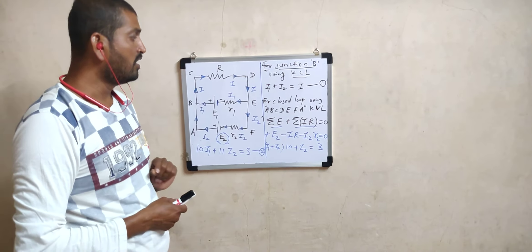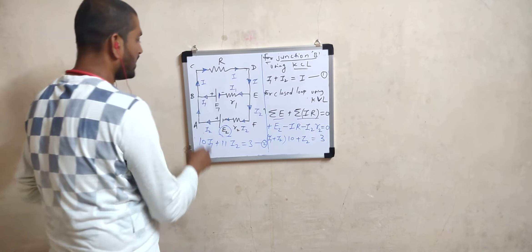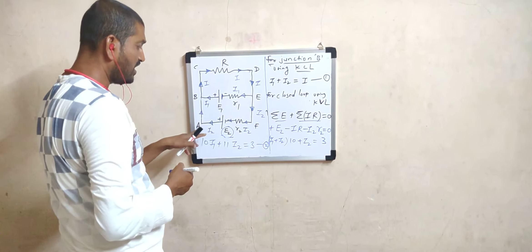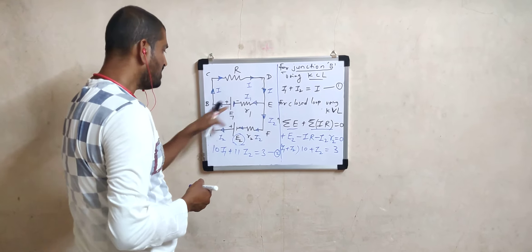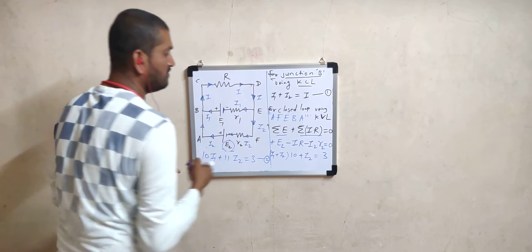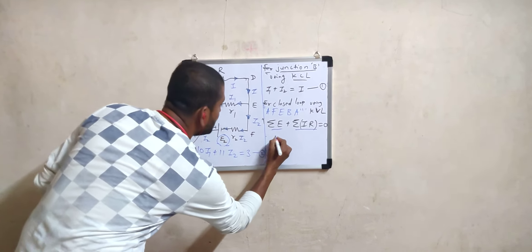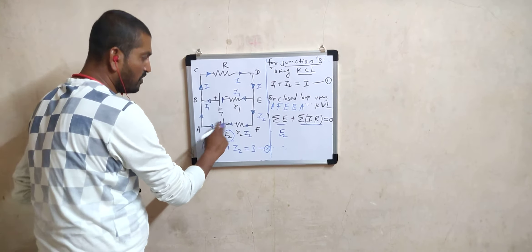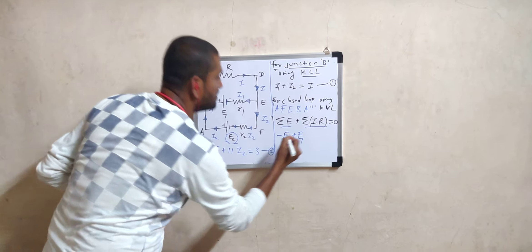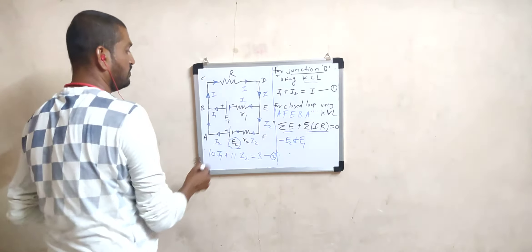We still require one more equation, so we consider the inner closed loop A-F-E-B-A in the anticlockwise direction. Applying KVL: starting at A, going A to F — cell with EMF E2. We are moving from positive side to negative, so it is −E2. F to E — no cell. E to B — yes, cell with EMF E1. Going from negative to positive side, so it is +E1. B to A — no cell. So sigma E = E1 − E2.